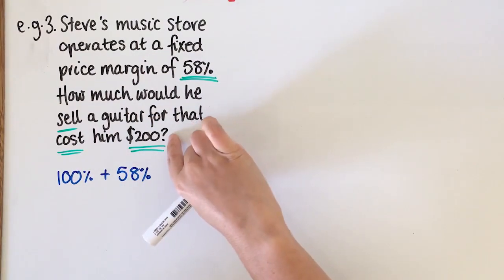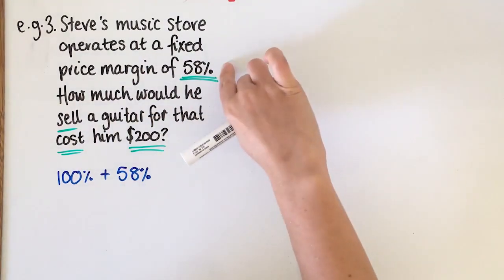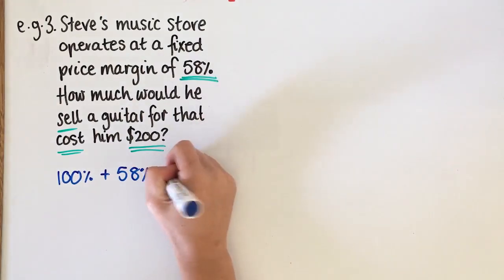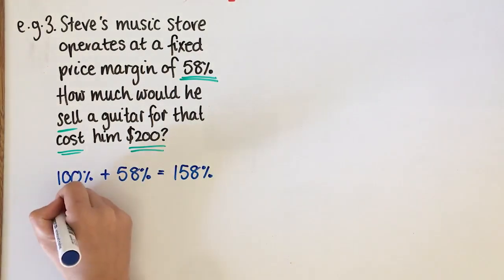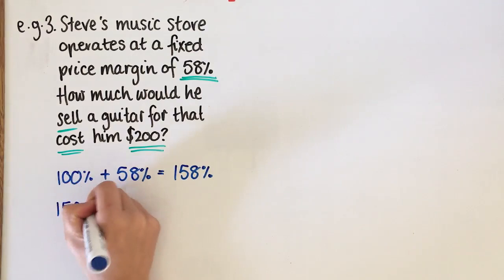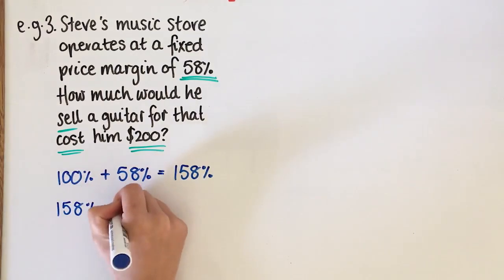Because this is 100% of how much the guitar cost, then he adds another 58% to it. So his selling price of the guitar is going to be 158% of what we started with. So we're going to have 158% of $200.